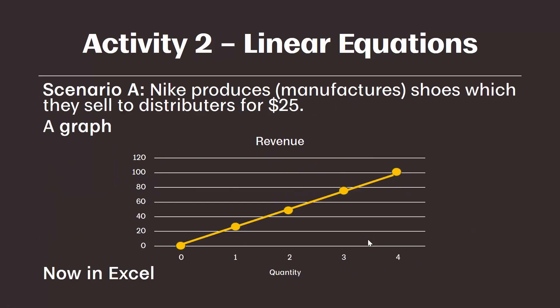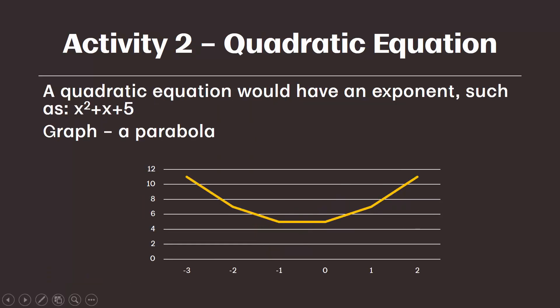An alternative to a linear equation is a quadratic equation. We won't use quadratic equations in this module, but you may see some in your program. You can identify a quadratic equation because the variable will be squared, and the graph will show a parabola — a curved line — versus the straight line we saw before. That completes what we've done manually for revenue. In the next video, we will complete what we just did manually, but do it in Excel.